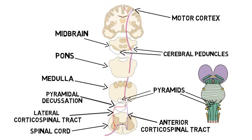It is thought that the lateral and anterior corticospinal tract fibers have slightly different specializations, with the lateral corticospinal tract controlling the movement of more distal muscles like those of the hands, and the anterior corticospinal tract controlling the movement of more proximal muscles like those of the trunk.